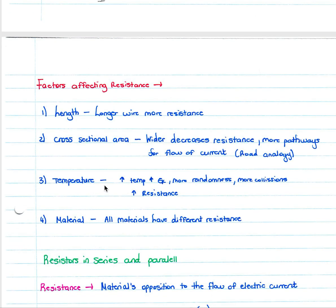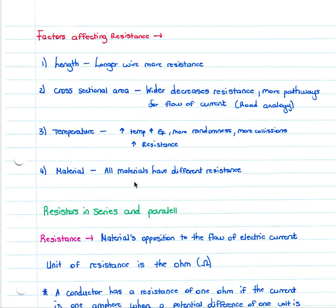Factors affecting resistance are often examined. First, length: a longer wire has more resistance because there is a greater distance for charge to flow. Second, cross-sectional area: a wider conductor decreases resistance because there are more pathways for current flow — like a six-lane road allowing more traffic flow compared to a one-lane road.